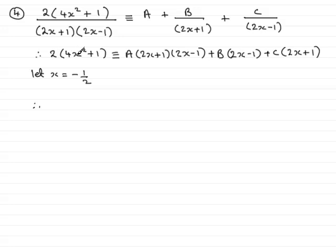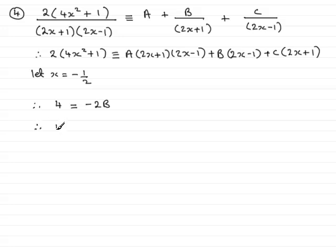Let x equal minus a half. Putting that into the left-hand side: minus a half squared is a quarter, 4 times a quarter is 1, plus 1 is 2, times 2 is 4. The a term's bracket goes to zero and the c term's bracket goes to zero. For the b term: 2 times minus a half is minus 1, minus another 1 is minus 2, giving minus 2b. So 4 equals minus 2b, therefore b equals minus 2.